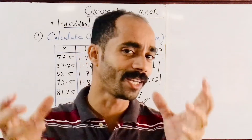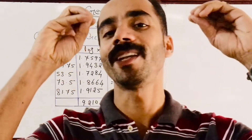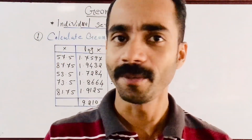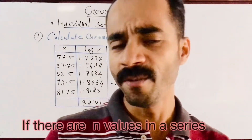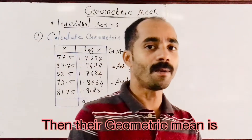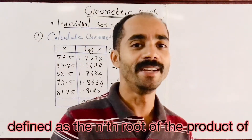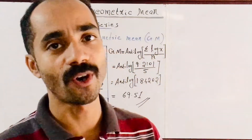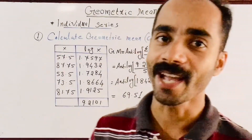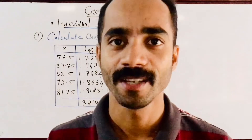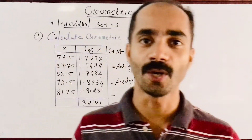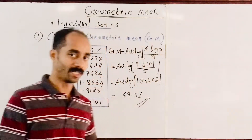Geometric mean is a type of average. Let's share the definition. If there are n values in a series, then the geometric mean is defined as the nth root of the product of those n values.